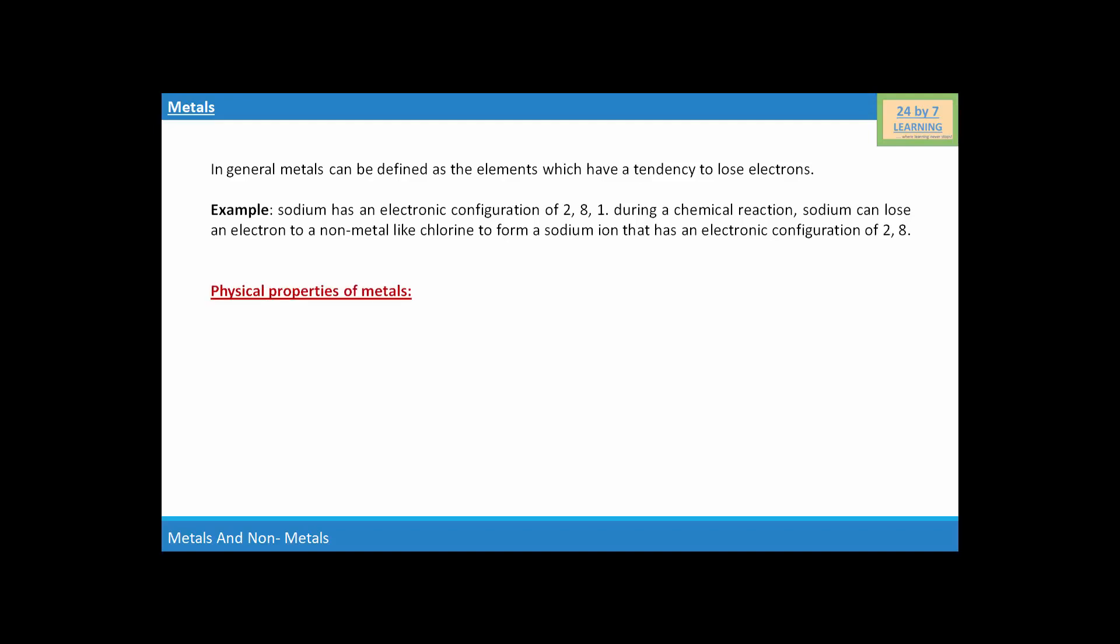Now, here we will see the physical properties of metals. So first of all we will see the first physical property of metal, that is conduction of heat and electricity. Metals are good conductors of heat and electricity. Now, come to the second physical property of metals, that is metallic luster. Metals have shining surface.